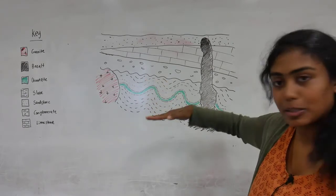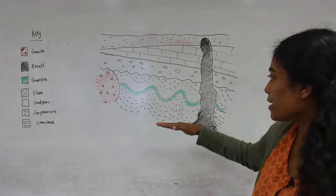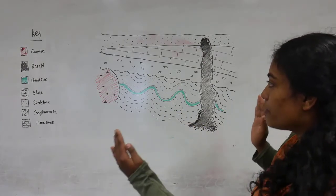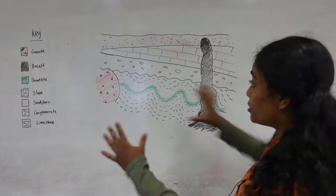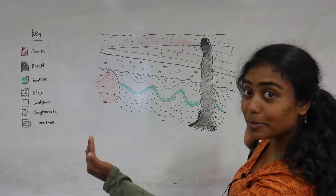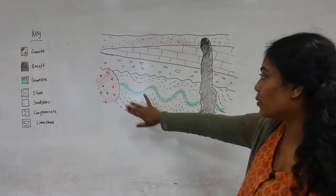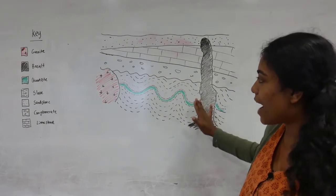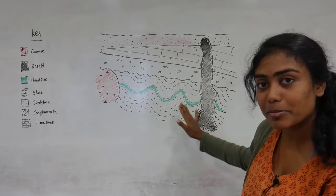So that would have originally been deposited horizontally, and then those units would have been subjected to some compression, which would have caused this folding and the metamorphism of these rocks.